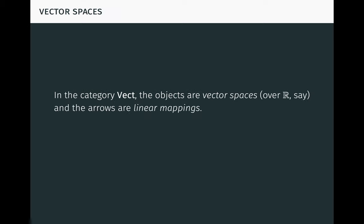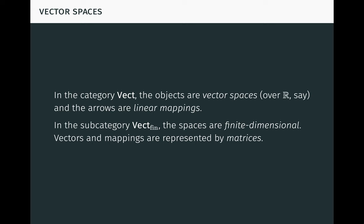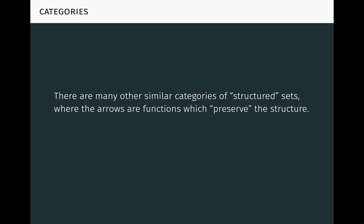As another example, in the category Vect, the objects are vector spaces over the real numbers, say, and the arrows are linear mappings. If we restrict attention to just the finite dimensional spaces, we get the subcategory Vect_Fin. In this category, vectors and mappings can be represented by matrices. There are many other similar categories of structured sets, where the arrows are functions which preserve the structure.